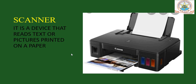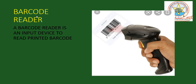The third input device is a scanner. It is a device that reads text or pictures printed on paper. Related to this is the barcode reader. The barcode reader is an input device used to read printed barcodes. When you go to a shopping mall, you can see the barcode reader in use. When you go to the billing counter, the product information comes from the barcode reader and then you can process the bill.